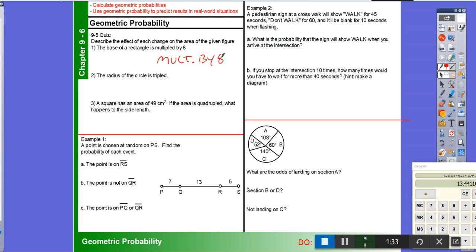Now let's look at number 2. The radius of a circle is tripled. That means the whole area has been multiplied by more than just 3. It's clearly not 3 times bigger, it's more than that. So if we're looking at the area of a circle, pi r squared, we're squaring this radius. Well, 3 squared is 9, so the area is 9 times bigger.